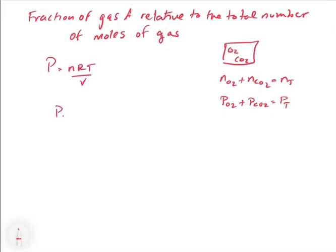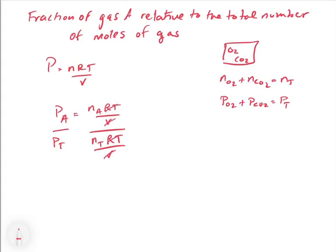We can write the pressure of gas A as equal to the n of A times RT over V. Then we divide both sides by the total, so the denominator becomes n total times RT over V. Because RT and V are constants — the gases share the same container, therefore the same volume and the same temperature — the RT and V cancel out. What we get is that PA over PT is equal to the number of moles of A over the number of moles total.